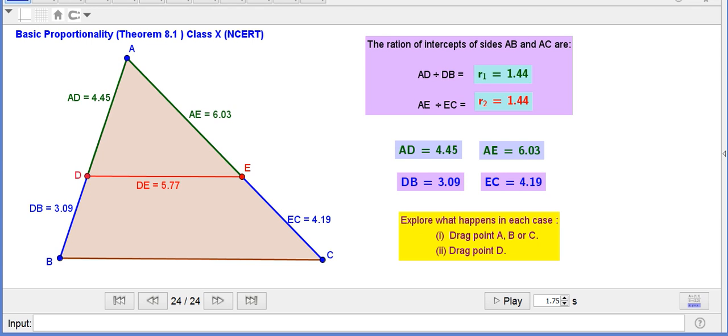The statement of the basic proportionality theorem: in triangle ABC, DE is parallel to BC, then the intercepts on AB and AC are in the same ratio. It means AD by DB is equal to AE by EC.